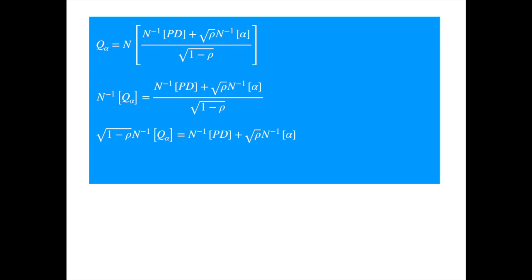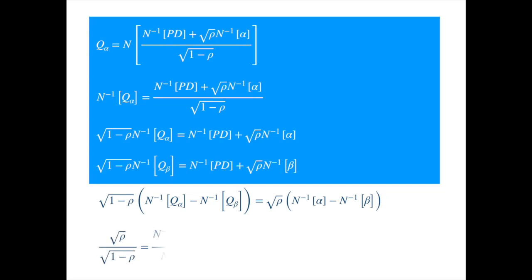Now let's represent the other quantile by beta. So we can write similar expression for the beta quantile. Subtracting the second equation from the first we get. And shifting the terms containing the rho to the left hand side we get.